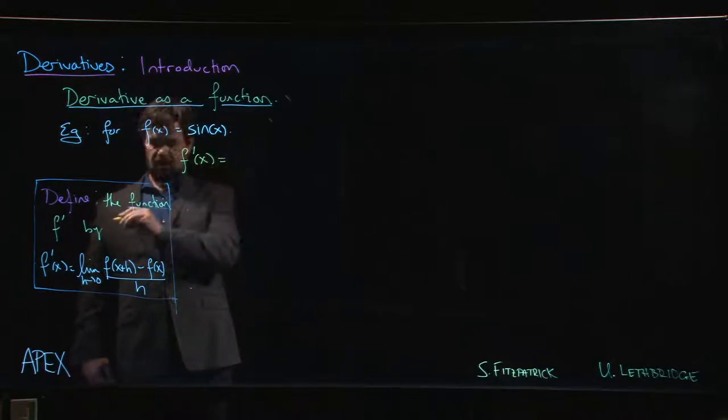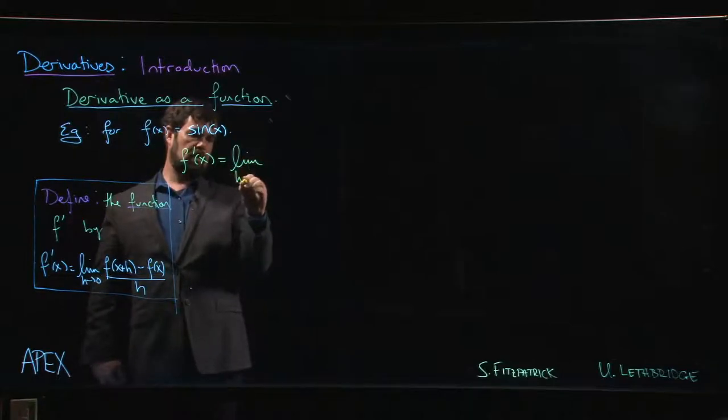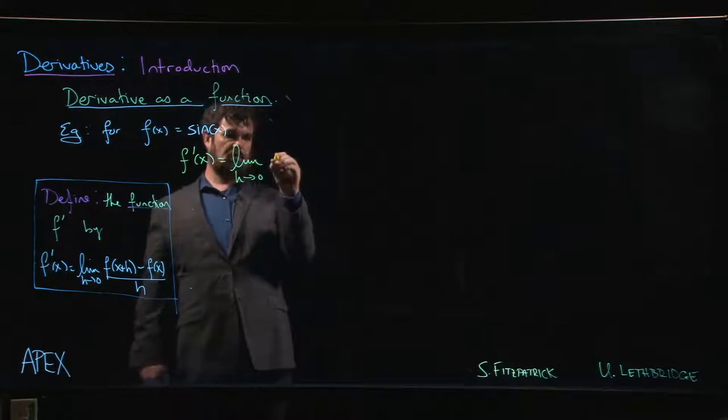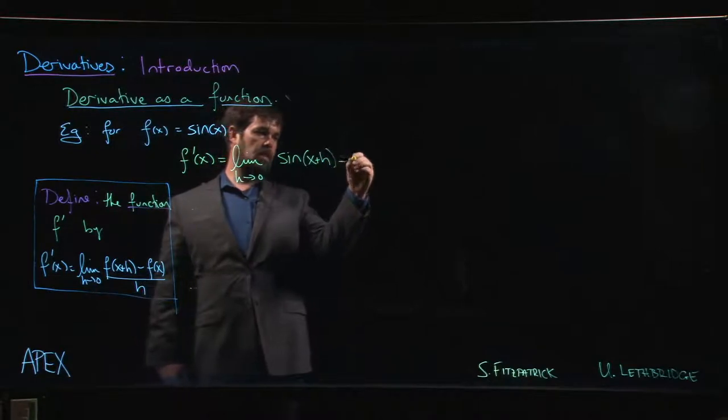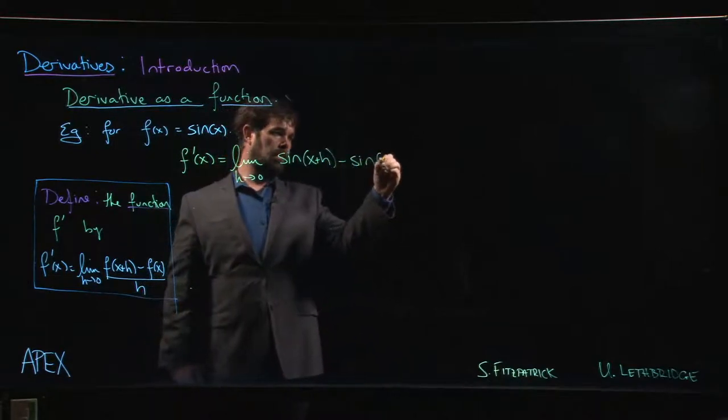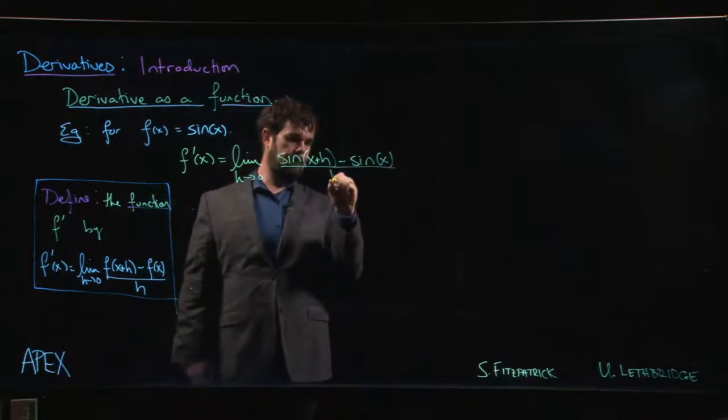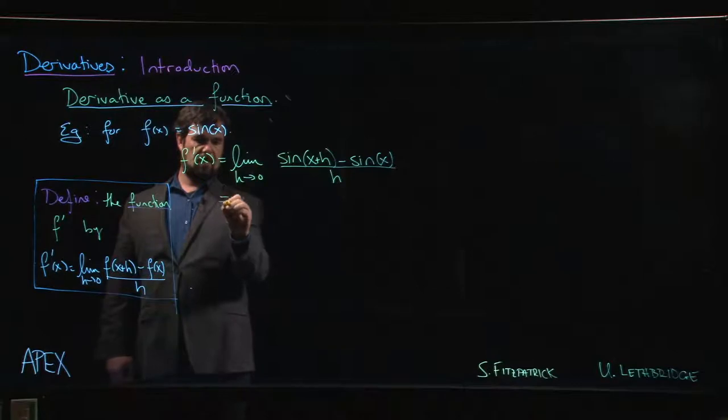So we know that f prime, by definition, is going to be the limit as h goes to 0 of f of x plus h. So let's put f in as sine. So sine of x plus h minus sine of x, all over h.